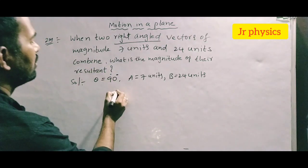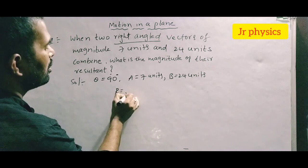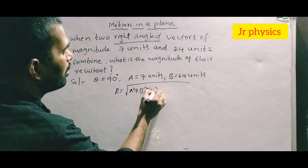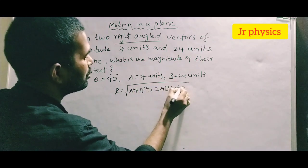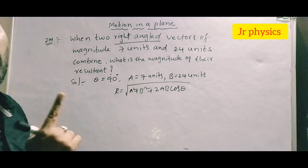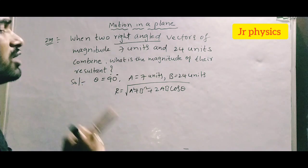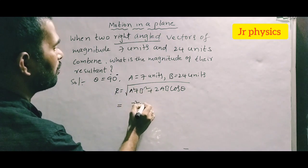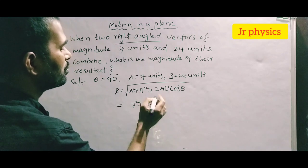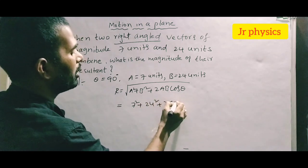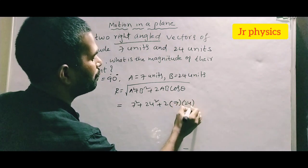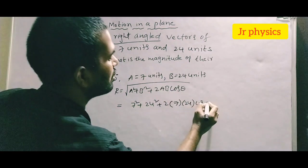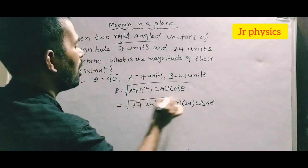The magnitude of the resultant of two vectors equals the square root of A² + B² + 2AB cosθ. Substituting: A is 7, B is 24, and theta is 90 degrees.